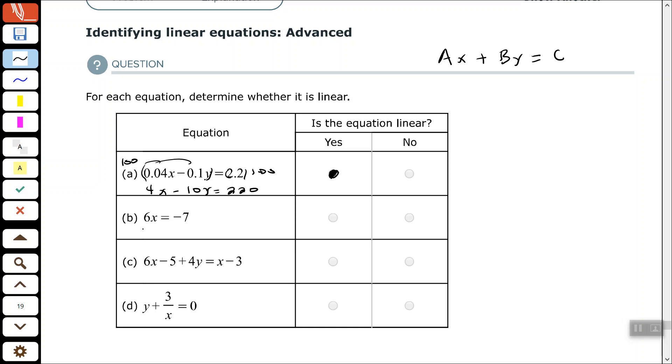Yes, that's a linear equation. In standard form, that would look like 6x plus 0y equals negative 7. So, yep, that's a linear equation.